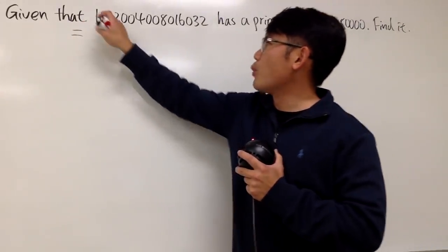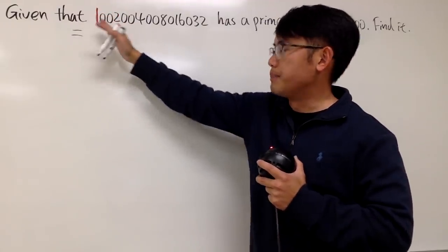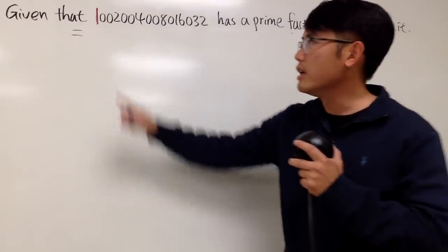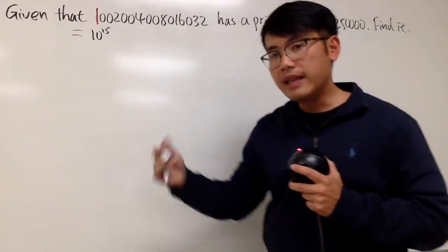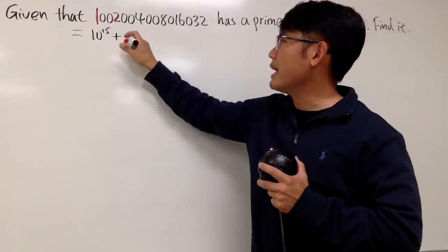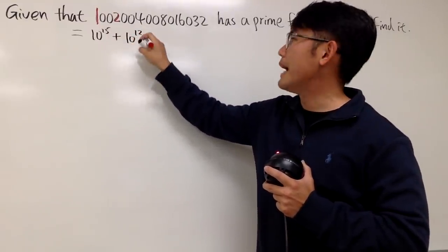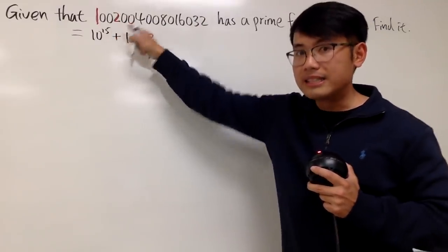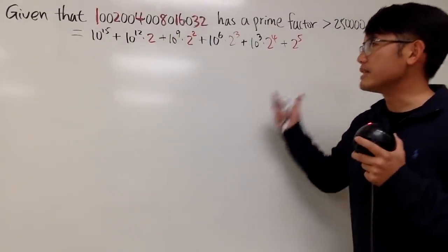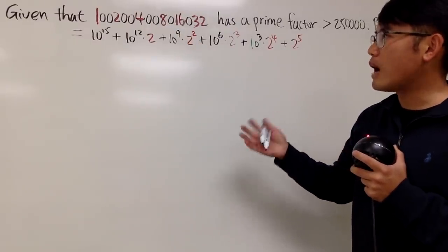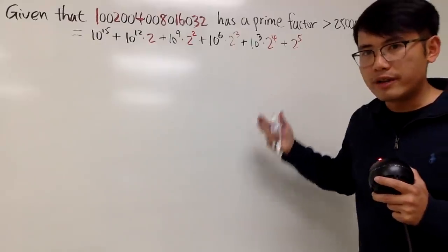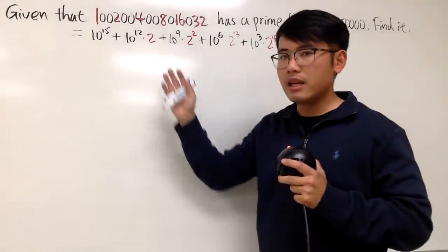Let's focus on the number 1 first. If you look at the number 1 and its place value, you have 1, 2, 3, 4, 5, 6, 7... you have 15 things after that, right? So we can say this one is the same as 1 times 10 to the 15th power. Next, the number 2 right here has 12 things after that, so I can write it as plus 2 times 10 to the 12th power. We do see a really nice pattern — we have some powers. The numbers in red are just powers of 2; the numbers in black are powers of 10.